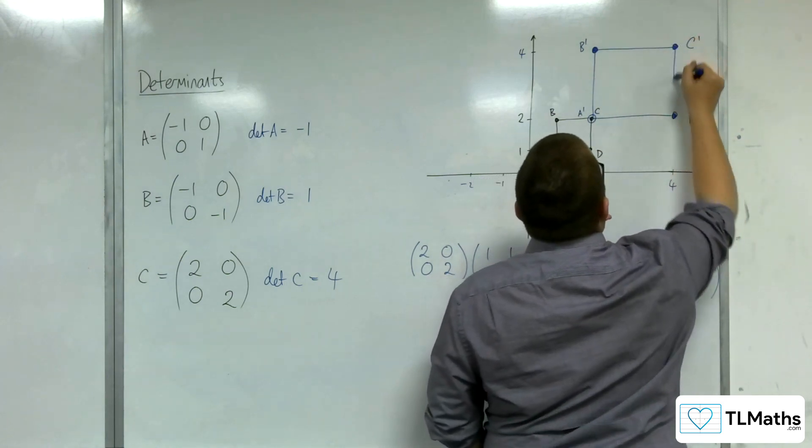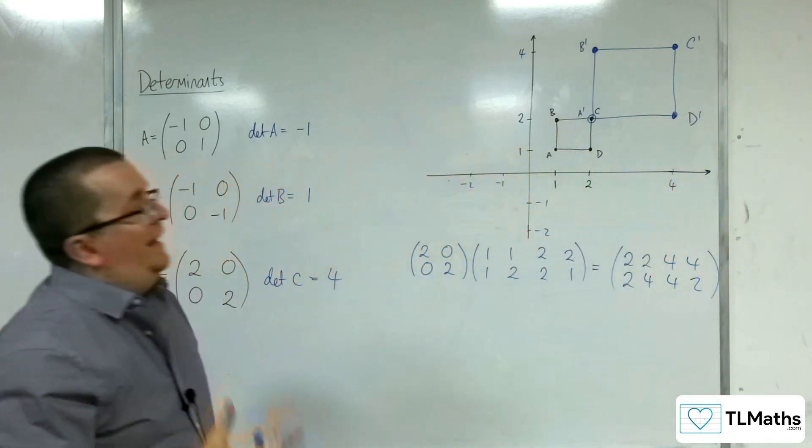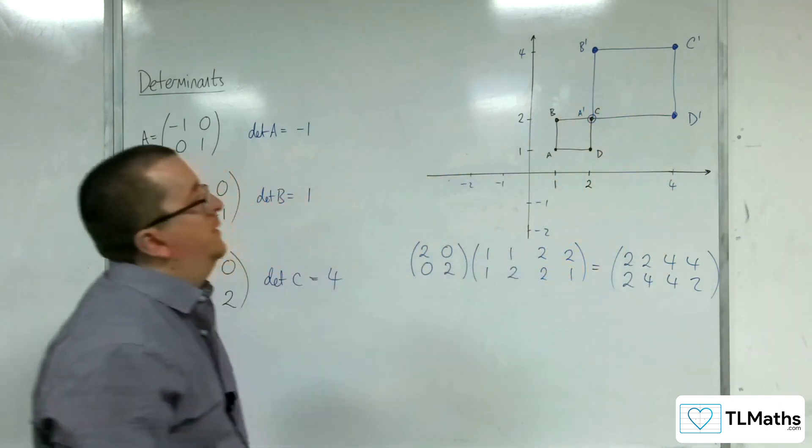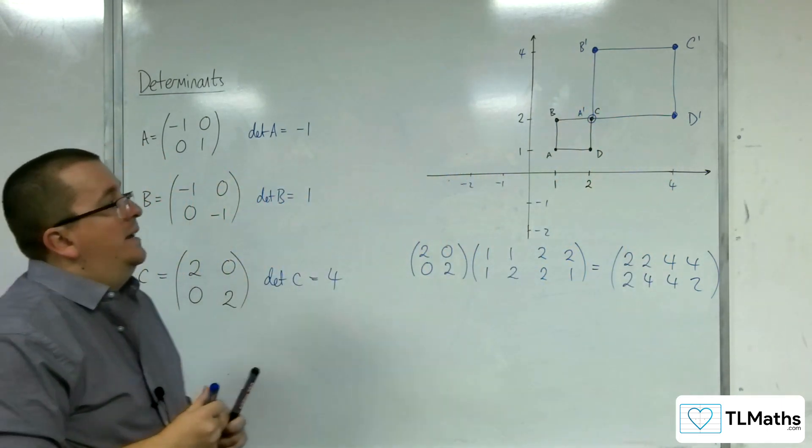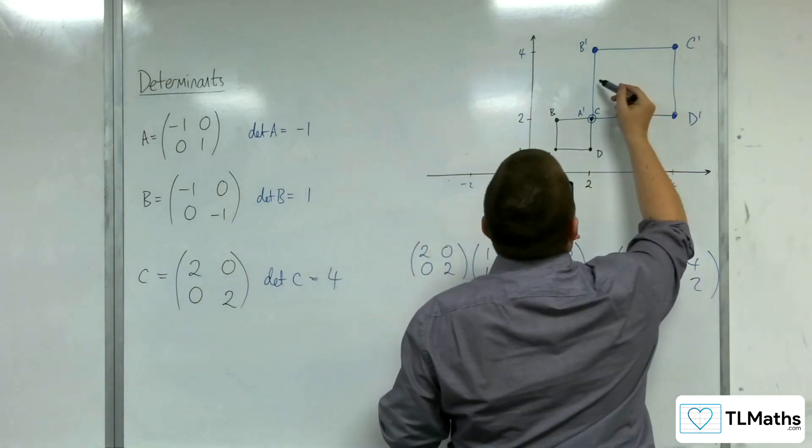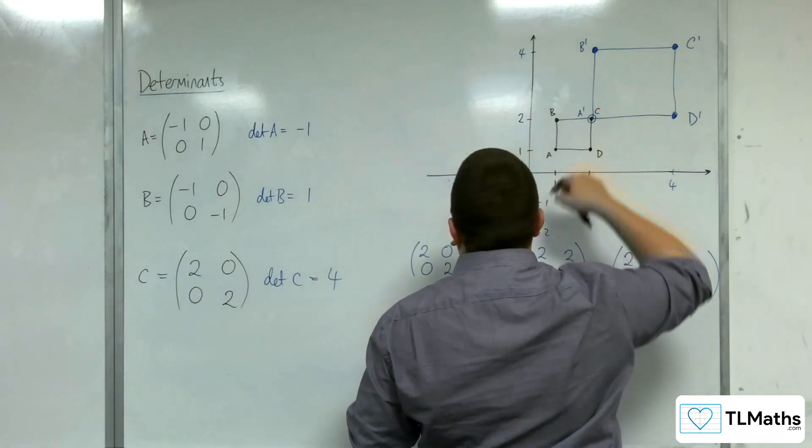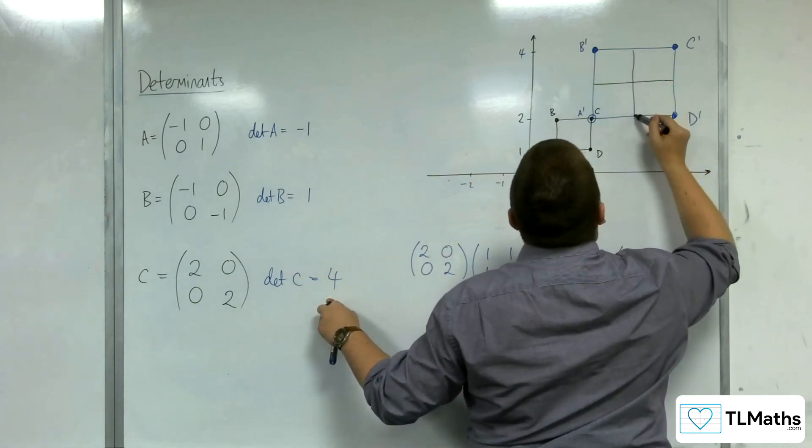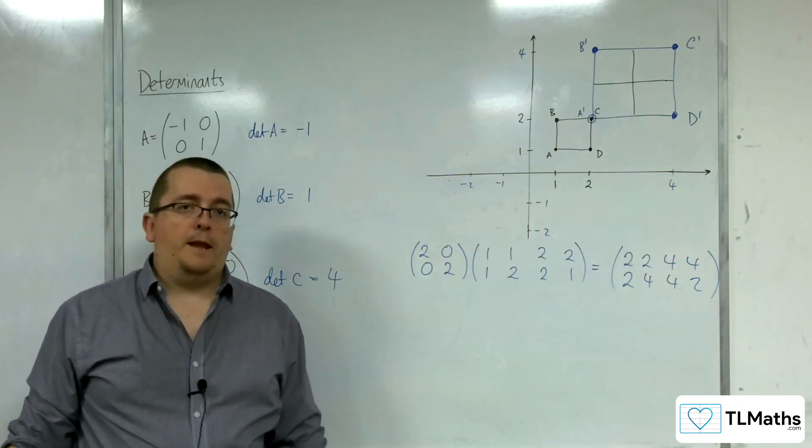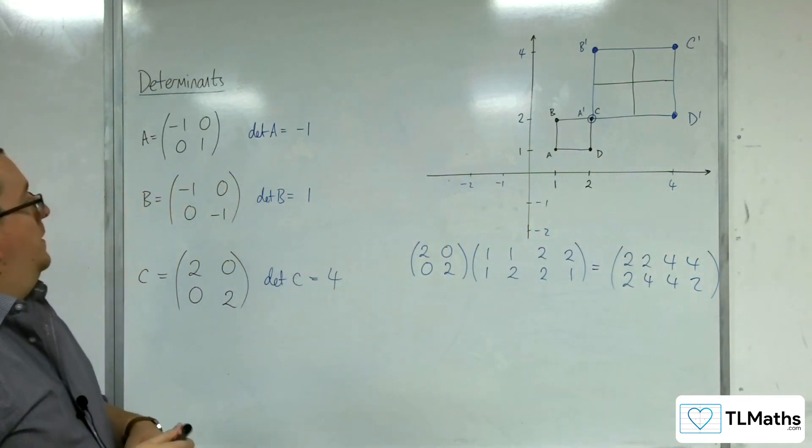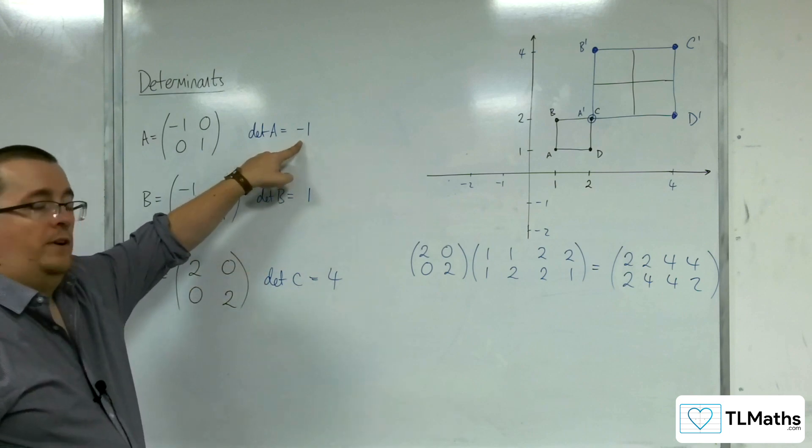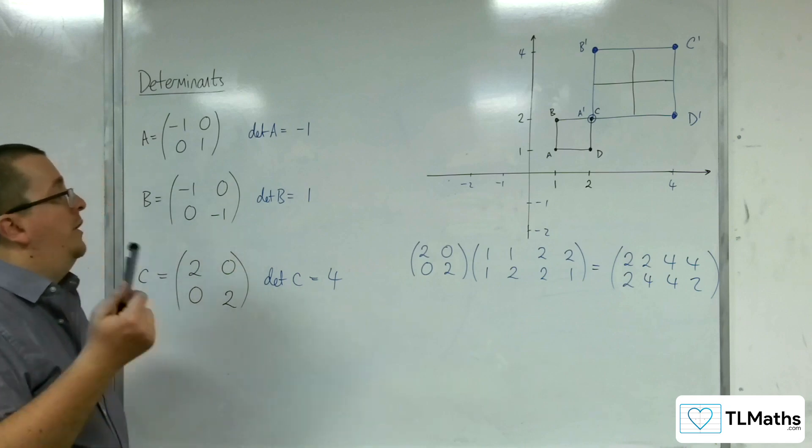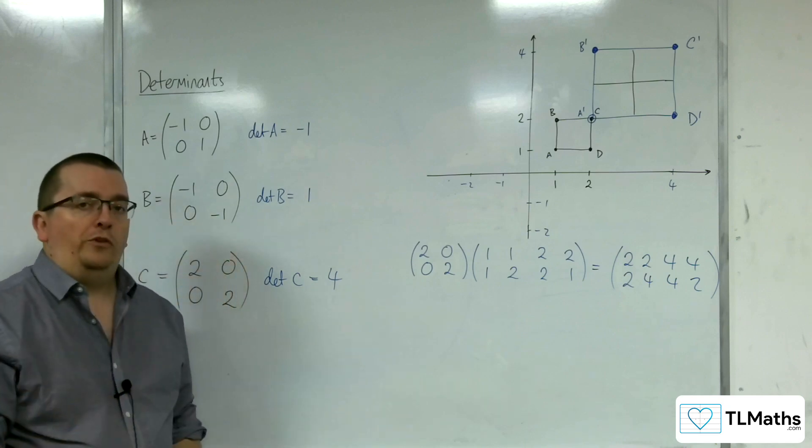It's also nice to see from this that not only is it clearly maintaining the orientation, A prime, B prime, C prime, D prime going around clockwise, but also clearly that the area was 1, and a matrix with determinant 4 has been applied to it, so you've now got 4 times the area. So yes, the determinant here was negative, so it changed the orientation, whereas these two didn't change the orientation because the determinant was positive.